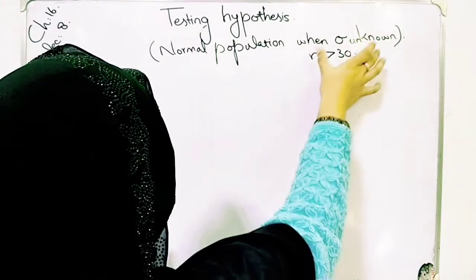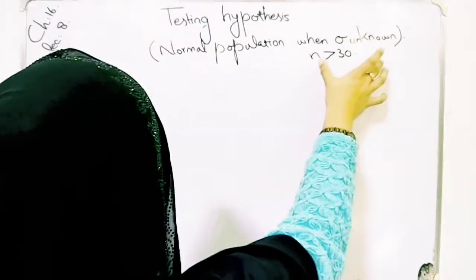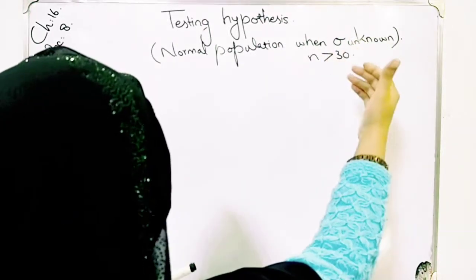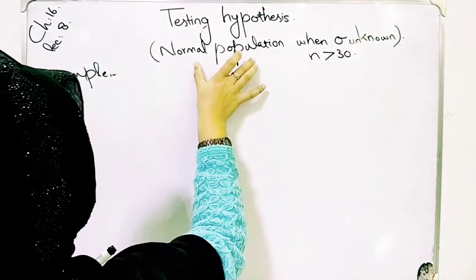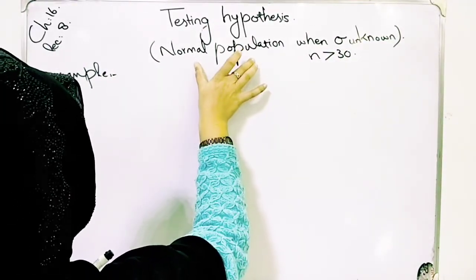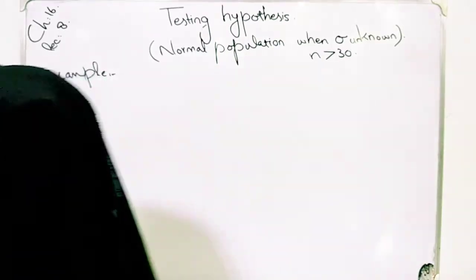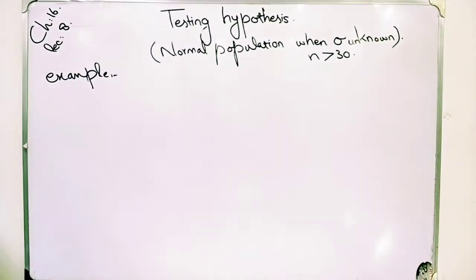We have two situations: when sigma is known and when sigma is unknown. The next situation we will discuss is non-normal populations, which we will cover in the next lectures.